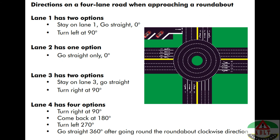Lane number three has two options: go straight to exit at the second exit, or turn right at 90 degrees to exit at the third exit. Lane number four has four options: turn right at 90 degrees for the third exit, come back at 180 degrees as a U-turn for the fourth exit, turn left at 270 degrees for exit number one, or go straight at 360 degrees — going fully around the roundabout — to exit at the second exit.